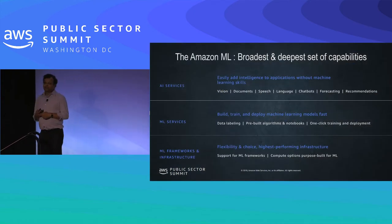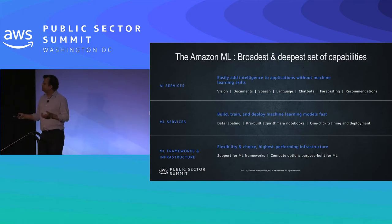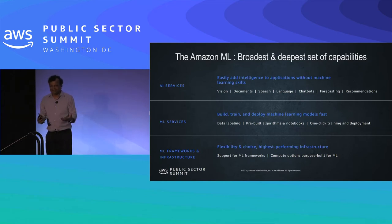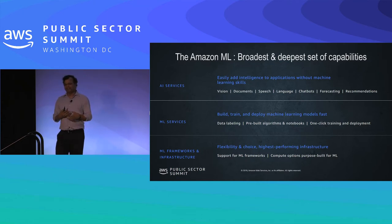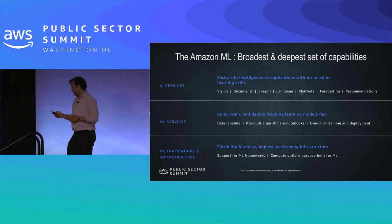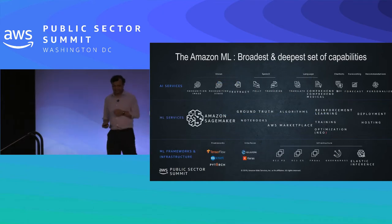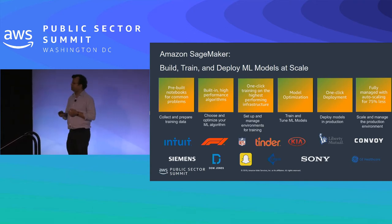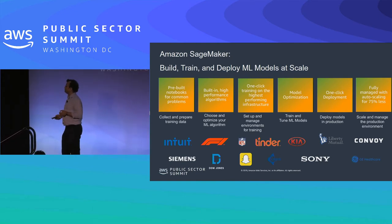Coming back to Amazon's offerings: you can do supervised learning using pre-built modules for computer vision with Amazon Rekognition, or work on documents, speech, and languages. For data labeling, there's a tool called Ground Truth, and then you can use SageMaker for training. You can also work at the infrastructure level. The general pattern is: start with a pre-built notebook, define one-click training infrastructure, perform model optimization, and deploy.